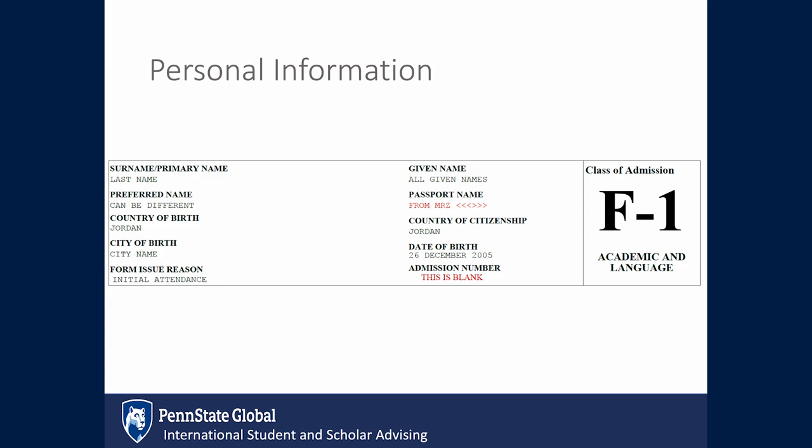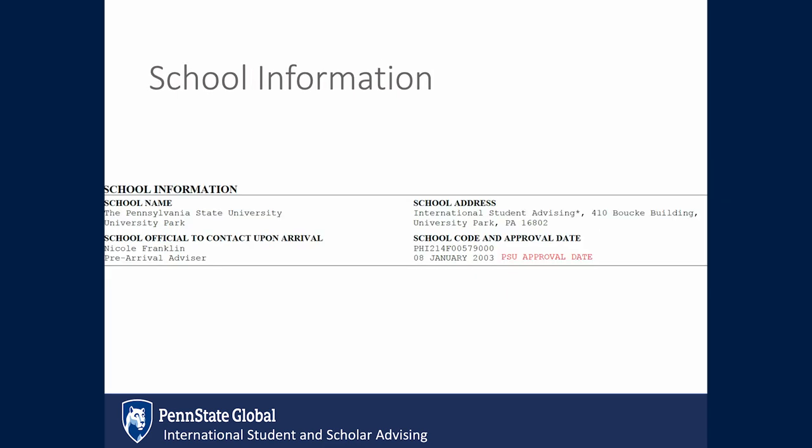We will leave the admission number blank. The school information listed for the Pennsylvania State University will also show the campus which you are attending. The school address is for the International Student and Scholar Advising Area of the University Park campus, and this school address will not change. The school code is important for payment of your I-901 fee. The date January 8, 2003 is the date that Penn State was approved to first issue I-20s. This date will not change.